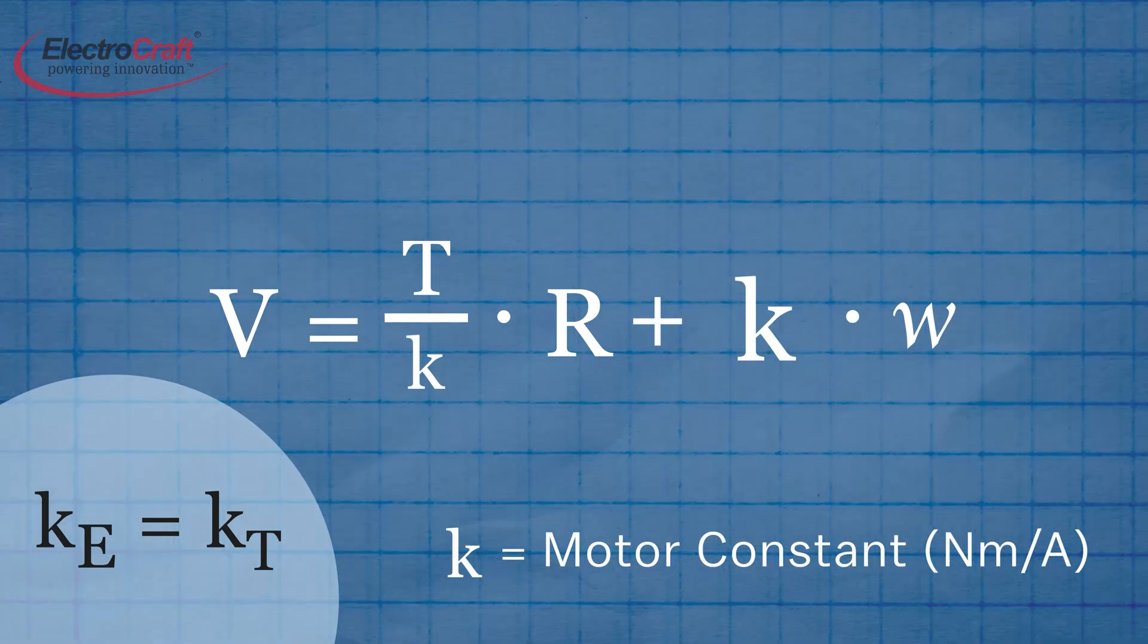Of course, the motor constant K doesn't change, and the resistance in the motor windings can be assumed to be constant. So you can see from the equation that when voltage is constant, torque and speed are inversely related.